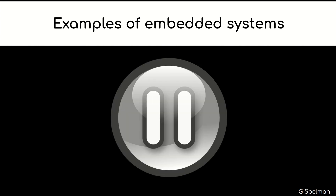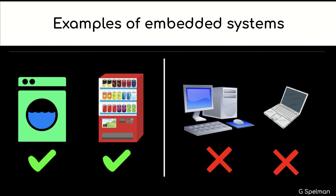What examples have you got of embedded systems? Think of two. Examples here are a washing machine and a vending machine — you may have chosen something else. However, a desktop computer, a laptop, or even a tablet are all general purpose computers. They don't have dedicated functions, so they are not correct examples of embedded systems.